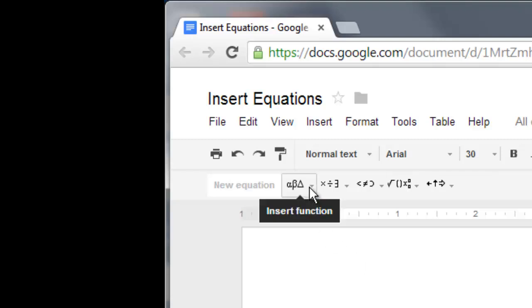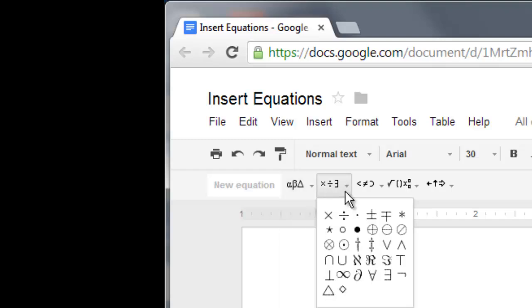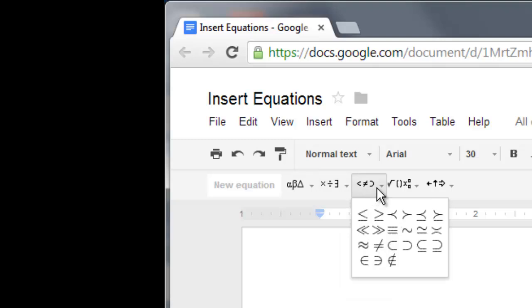Secondly, notice that there are now five menus on the Equation Toolbar. The first menu contains Greek symbols like alpha and beta. The second menu contains mathematical operations like multiplication and division. The third menu contains comparison symbols like less than or equal to, greater than or equal to.